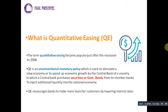Once quantitative easing is applied by the central bank of a nation — like the Reserve Bank of India — the central bank purchases securities or government bonds from its member banks and pays them an amount in return, injecting additional liquidity into the national economy. New notes are not printed; instead, the central bank increases the amount in their accounts electronically.